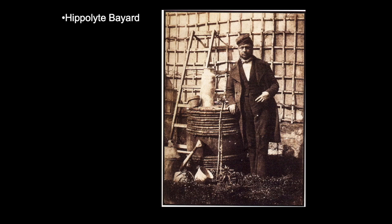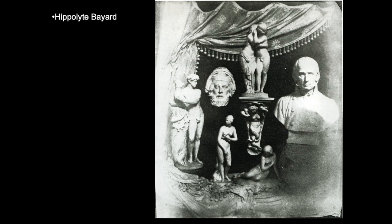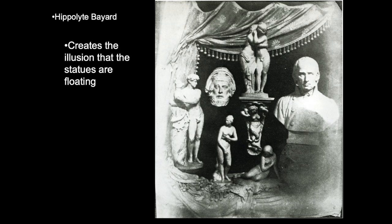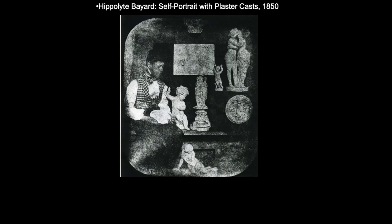This is another portrait of Bayard. Here he is standing out in his garden — he loved his garden. He was also one of the first people to create the effect of objects appearing to float. These objects look like they're floating, but really they're just placed against a black backdrop. You can see that Bayard was interested in the idea of photographic truth, as this creates the illusion that the statues are floating — though when you see him sitting with the plaster casts, you can tell they are not.